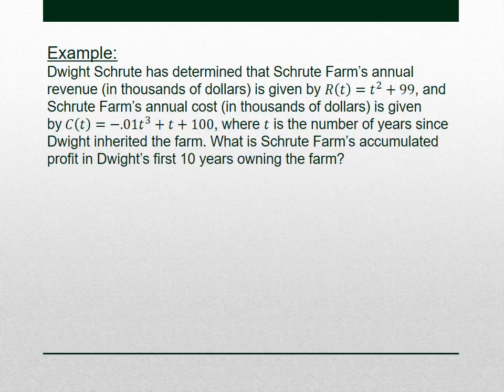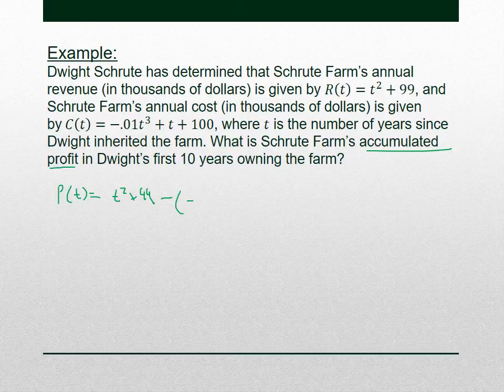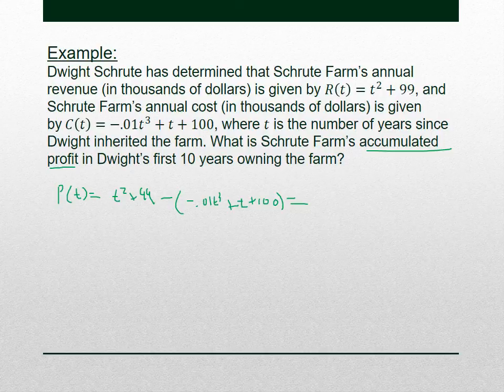We have annual revenue and annual costs, and we want the accumulated profit. Recall that profit is revenue minus cost. Revenue is T² + 99 minus the cost −0.01T³ + T + 100. So the annual profit for Schrute Farms is 0.01T³ + T² − T − 1. That's Dwight's annual profit — in year T, that's the profit he makes in that year.